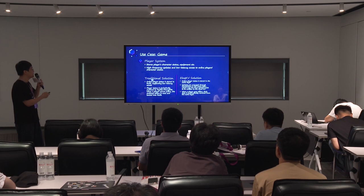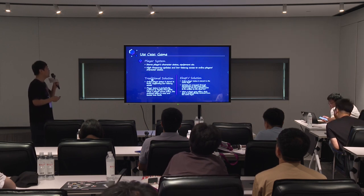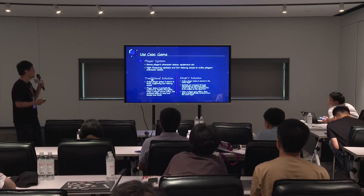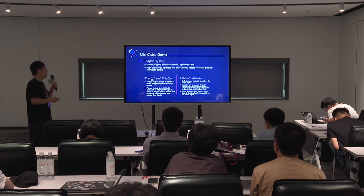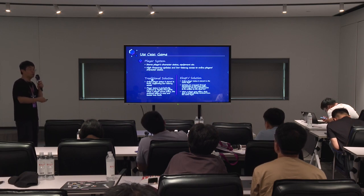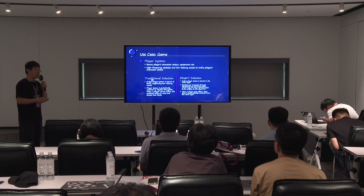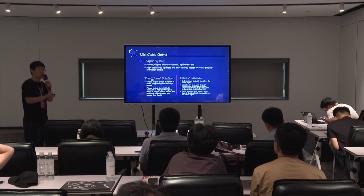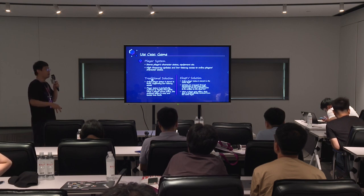The next use case is a game — for example, storing the player's status. This use case has very high-frequency updates and very low latency reads. The traditional solution uses Redis to serve low latency reads but depends on MySQL or MongoDB for persistence. Using LLKV, you can store the online player's data in memory in the cache layer, do updates in this cache layer, and checkpoint to the underlying Cassandra or HBase. When a player goes offline, the data in memory can be evicted to the underlying KV storage.